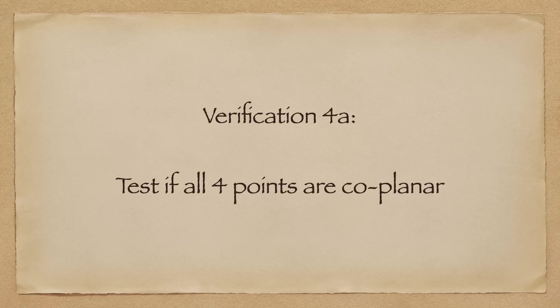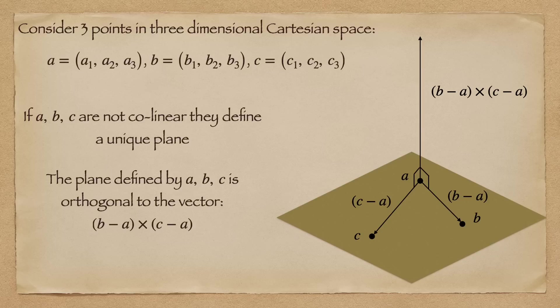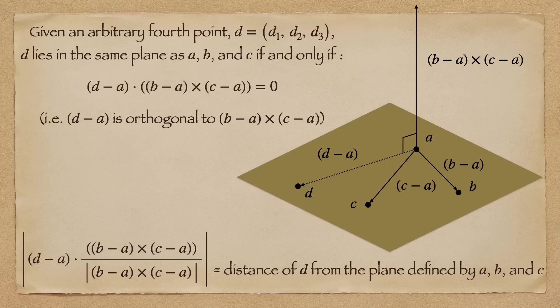We can now test whether or not these four points are a coplanar set. Given any three arbitrary points in three-dimensional space, as long as those points are non-degenerate and not collinear, they will define a plane. That plane will be orthogonal to the cross product of (B-A) and (C-A). It's not really important that you understand what a cross product is, other than the cross product of any two vectors is orthogonal to both those vectors.